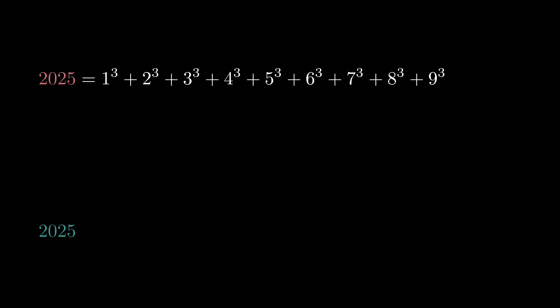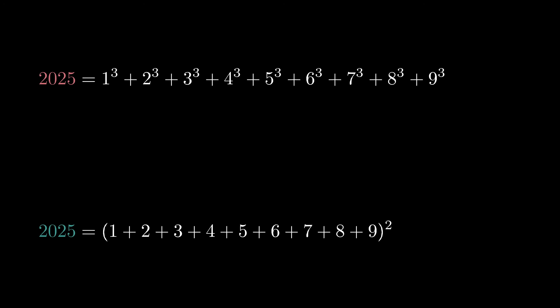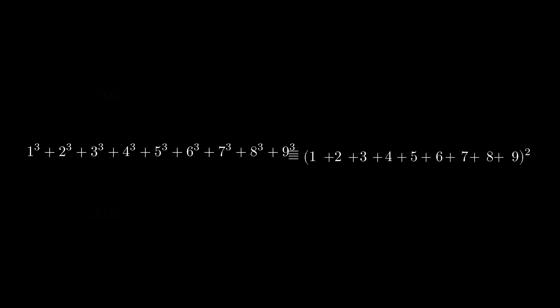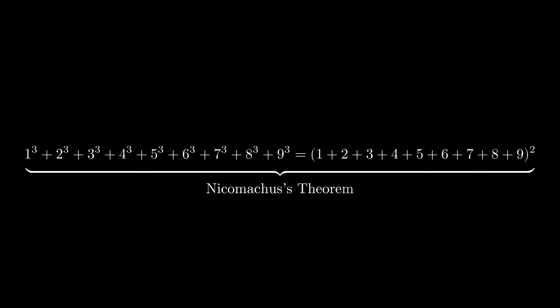On the other hand, it's also the square of the sum of the first nine positive integers: one plus two plus three and so on up to nine. This means that the sum of the first nine cubes is equal to the square of the sum of the first nine positive integers. This is one example of a famous theorem known as Nicomachus' theorem.